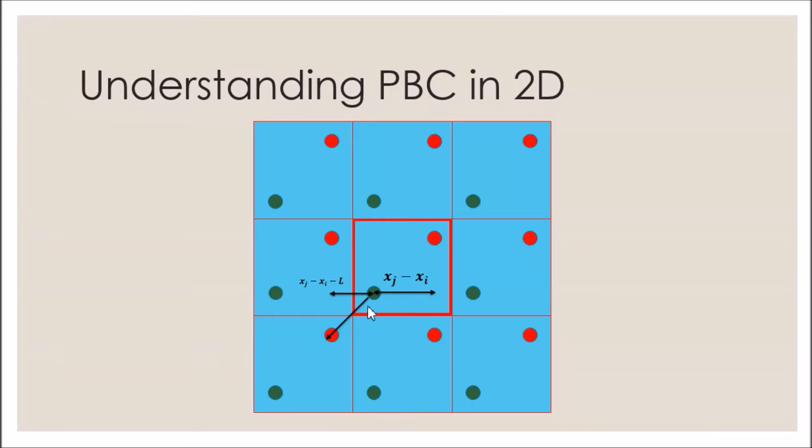We can then notice a pattern here, which is if I move in x direction, all the images in this column is xj minus xi, all the images in this column is xj minus xi minus L, and all the images in this column is xj minus xi plus L. And so goes for the y directions and z directions in 3D.